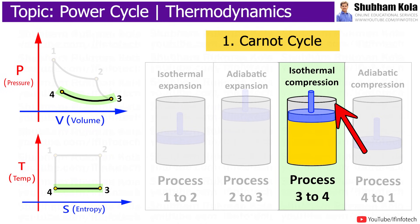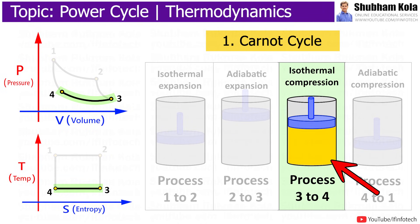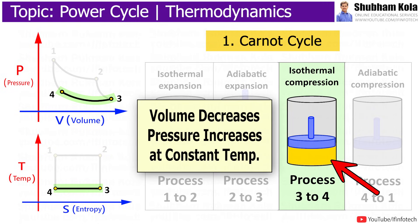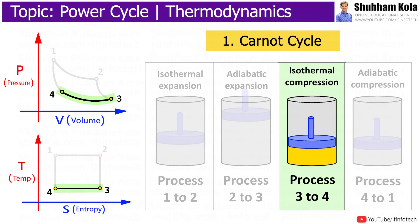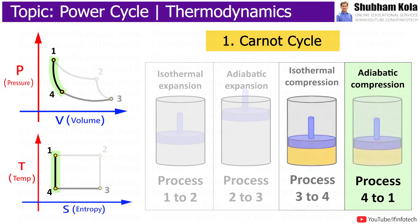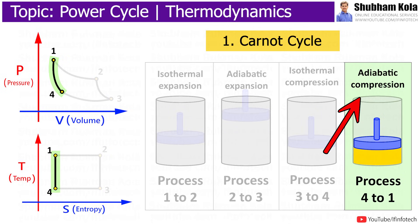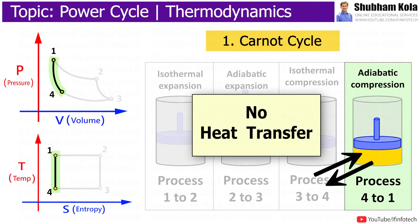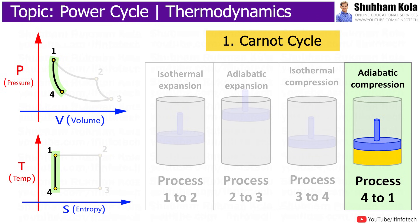Process 3 to 4 is the reversible isothermal compression process, where volume decreases and pressure increases at constant temperature. During this process, heat loss Q-out occurs when the surroundings do work at temperature T1. Process 4 to 1 is the reversible adiabatic compression process. Since the system is thermally insulated, no heat transfer occurs, and temperature rises back to TH as the surroundings continue to do work on the gas.